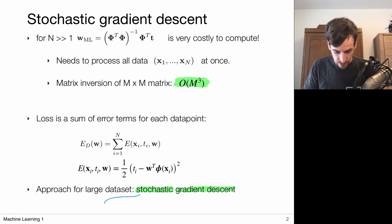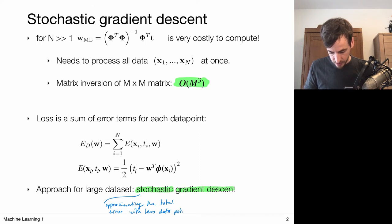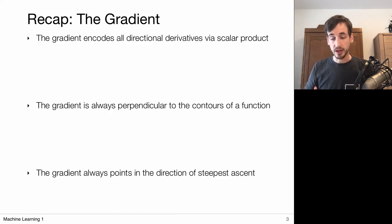The stochastic part refers to approximating the total error with fewer data points. The second part is gradient descent — a technique for minimizing the error. Before explaining gradient descent, let's recap some key properties of the gradient.